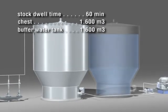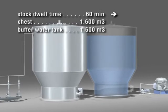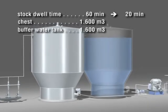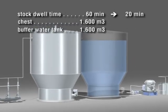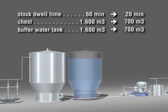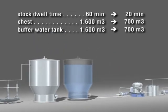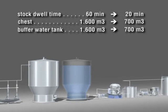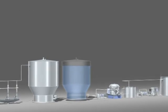With the ECHO process, however, we have reduced the dwell time to just 20 minutes, which means we can reduce the stock and water chest to 700 cubic meters, less than half the original size. This saves an enormous amount of space, as well as significant hardware costs and pumping energy.